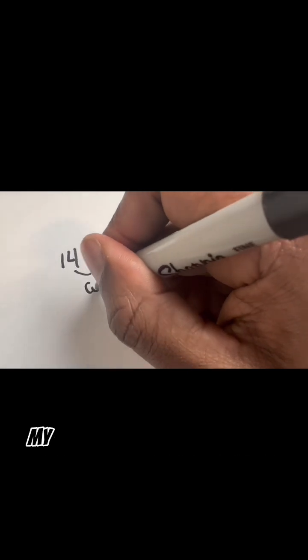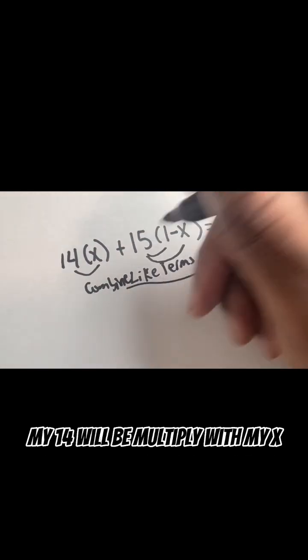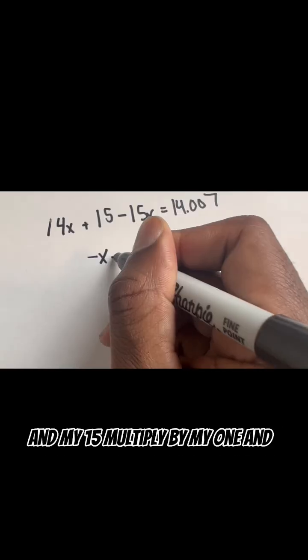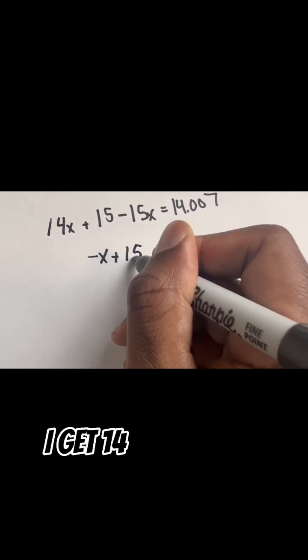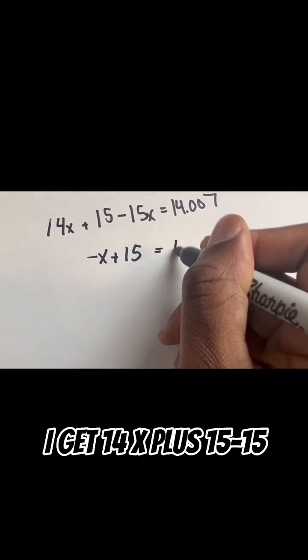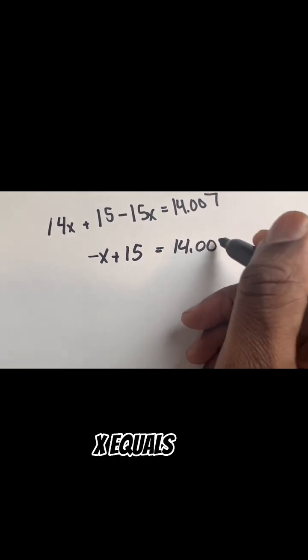What's going to happen is my 14 will be multiplied with my x and my 15 multiplied by my 1 minus x. So I do that, I get 14x plus 15 minus 15x equals 14.007.